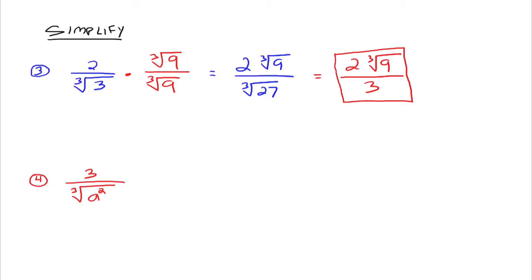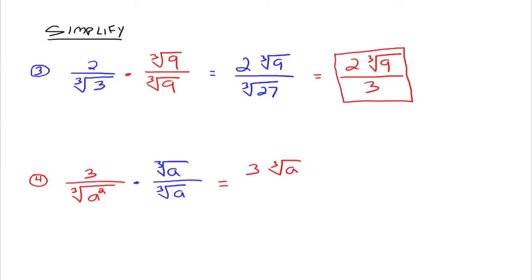With cube roots, fourth roots, or fifth roots, you have to be a little more careful about what you're going to multiply the top and the bottom by in order to rationalize the denominator. Let's try: 3 over the cube root of a squared. The question is, what do we need to multiply the cube root of a squared by so that we get a perfect cube? Well, a cubed would be a perfect cube, so we need to multiply a squared by a. So we're going to multiply the top and the bottom by the cube root of a. The numerator becomes 3 times the cube root of a, all over the cube root of a cubed.